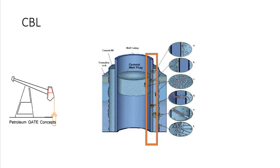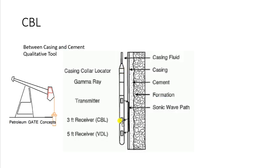The CBL tool is basically a sonic tool which is run on the wire line. The distance between the transmitter and the receiver of the sonic waves is about only 3 feet. The logging tool must be centralized in hole to give accurate results.